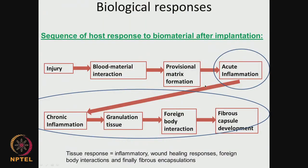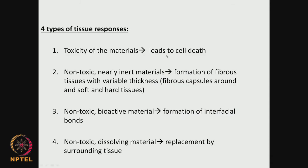There could be 4 types of tissue responses because there are different types of material coming into the human system. First, toxicity of the material — the material itself may be toxic, or there could be some leachants that are toxic, such as lactic acids, acrylic acids, or silver nanoparticles. All this could be very toxic because of local concentration gradients, leading to cell death.